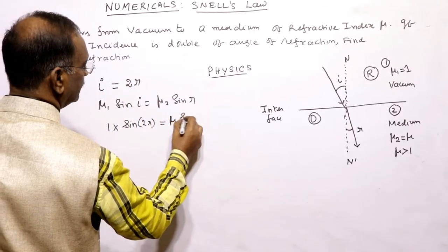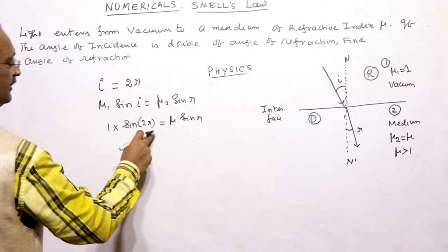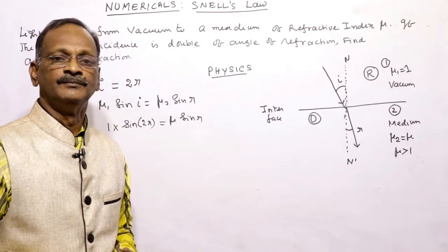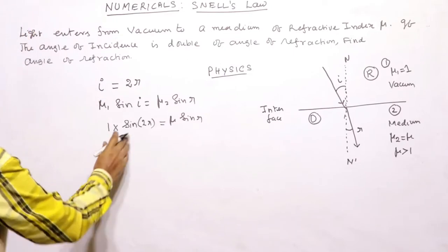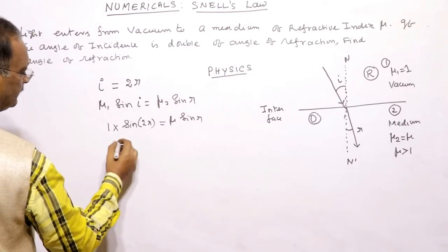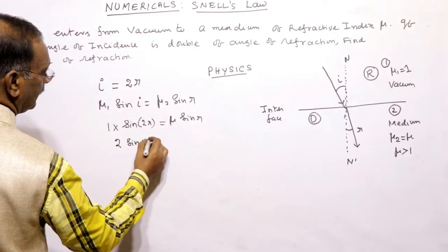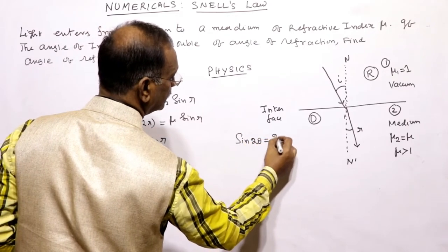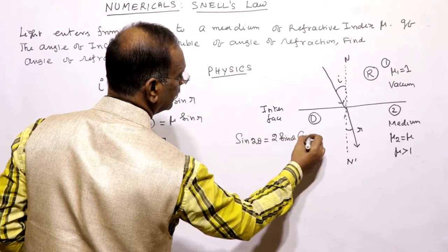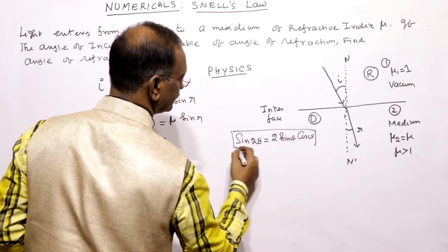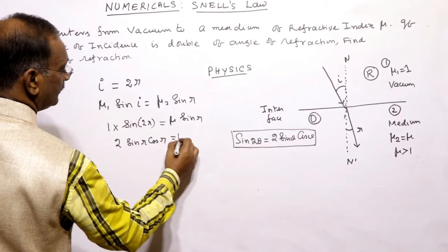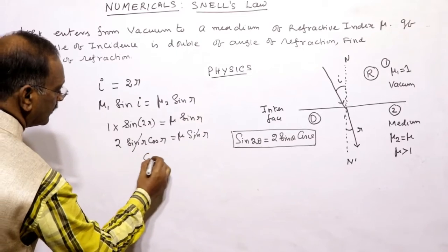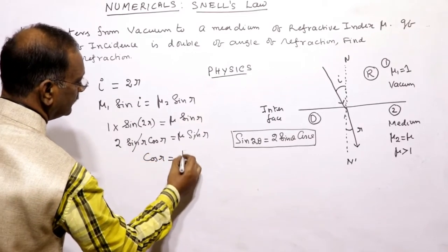Since i = 2r, we have sin(2r) = mu × sin(r). Using the trigonometric identity sin(2θ) = 2sinθcosθ, the left side becomes 2sin(r)cos(r). So 2sin(r)cos(r) = mu × sin(r). Cancelling sin(r) from both sides gives cos(r) = mu/2.